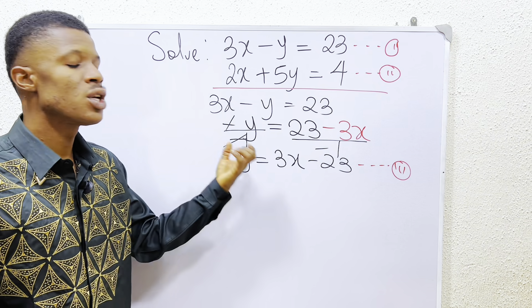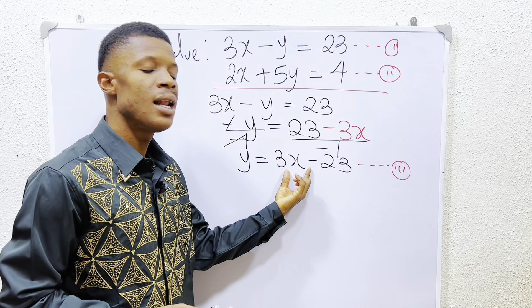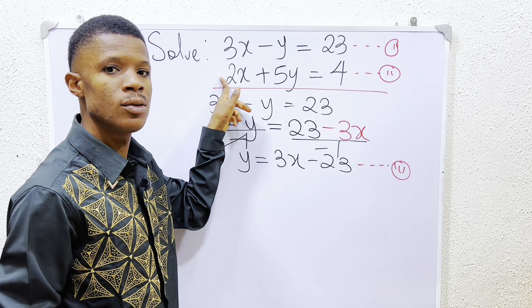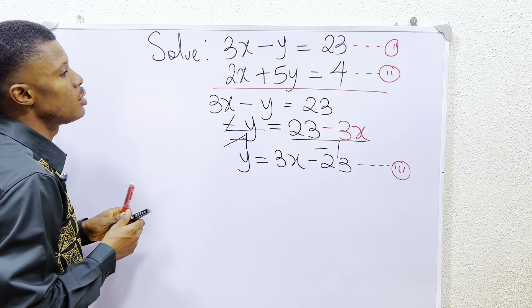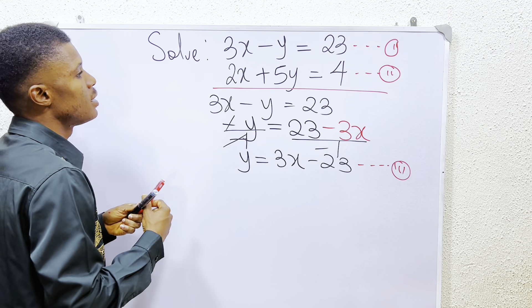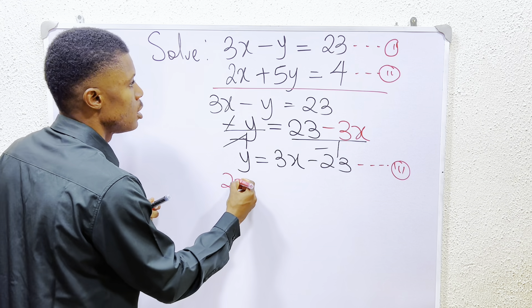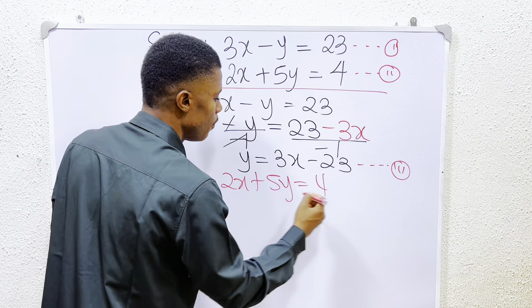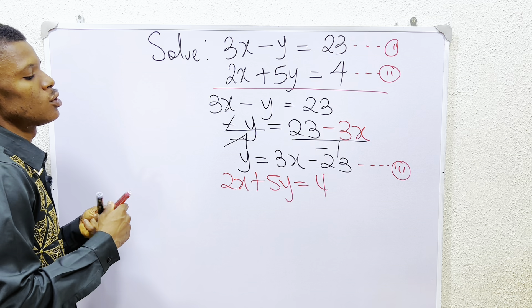So what do we do? We substitute the value for y to be 3x minus 23 in the second equation. So from second equation, what do we have? In the second equation, we have that 2x plus 5y is equals to 4.